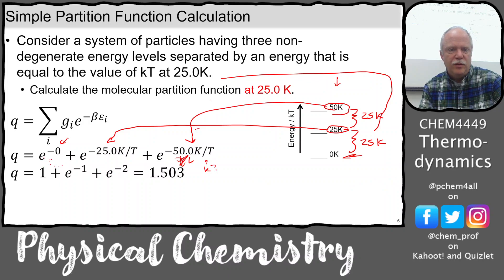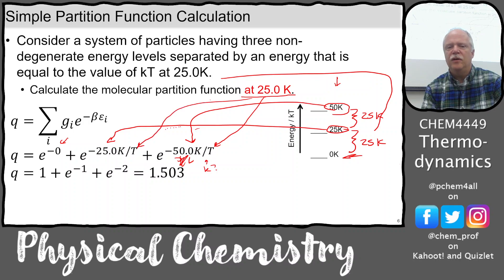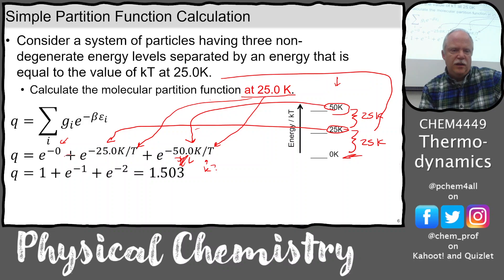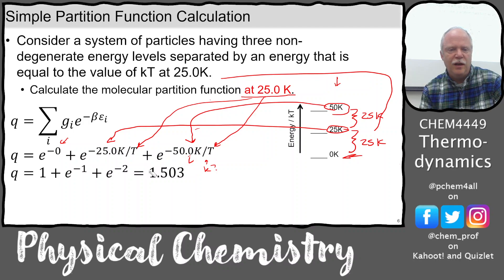We have the first, second, and third terms. We're calculating the molecular partition function at 25 Kelvin, so that's the temperature in the denominator. e to the 0 is 1. Then e to the minus 25/25, that's e to the minus 1. And e to the minus 50/25 is e to the minus 2. We add all those up and our partition function is 1.503.